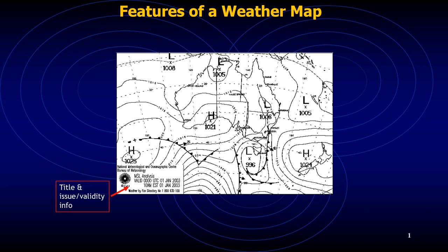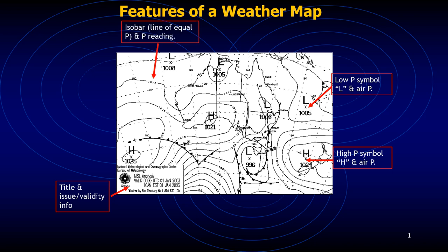Here is a high pressure symbol — 'H' stands for high pressure, and the pressure is provided right below the symbol, for example 1024, which is the atmospheric pressure at that point in time. 'L' stands for low pressure, and the low pressure value is also provided right below the symbol. Wherever you see the letters H and L, they stand for high pressure and low pressure respectively, with the pressure value shown beneath.